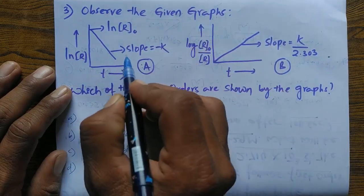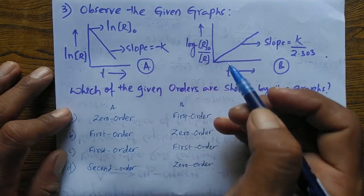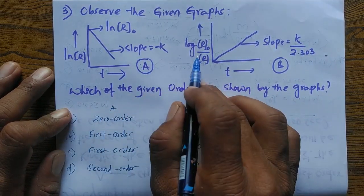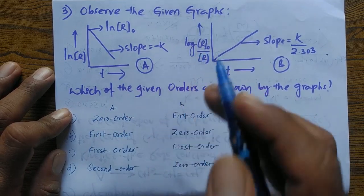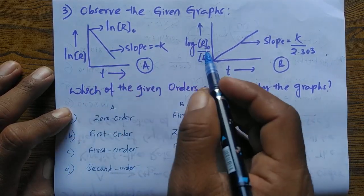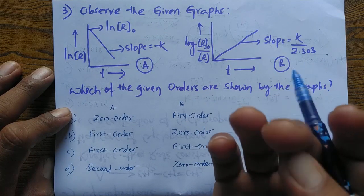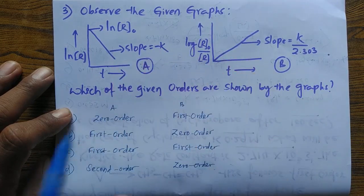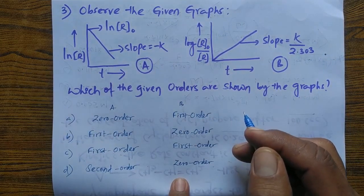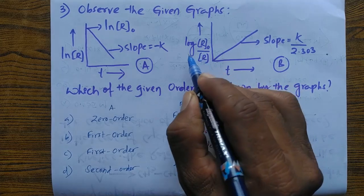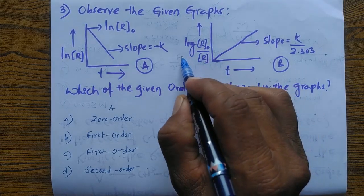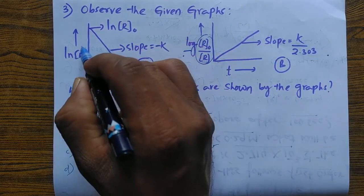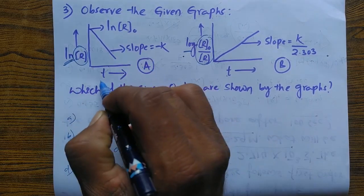The next question: observe the two given graphs and determine which orders are shown. The graphs plot concentration of reactant in terms of log versus time, and also ln of concentration of reactant versus time. We need to determine whether these represent zero order, first order, or second order reactions.